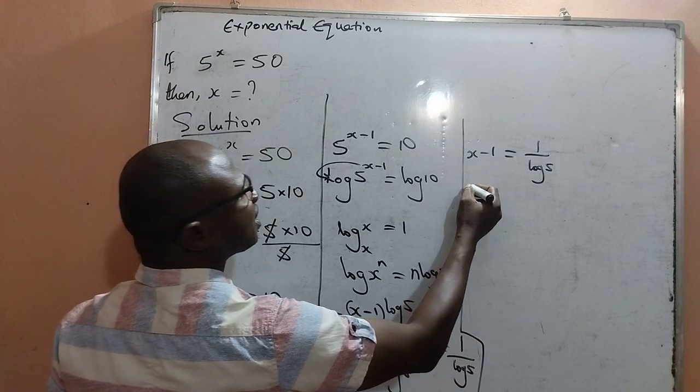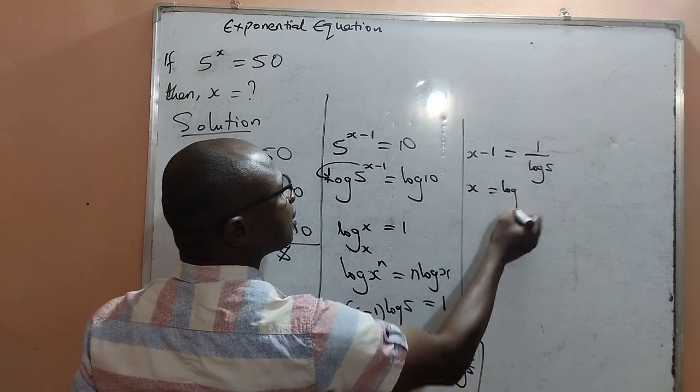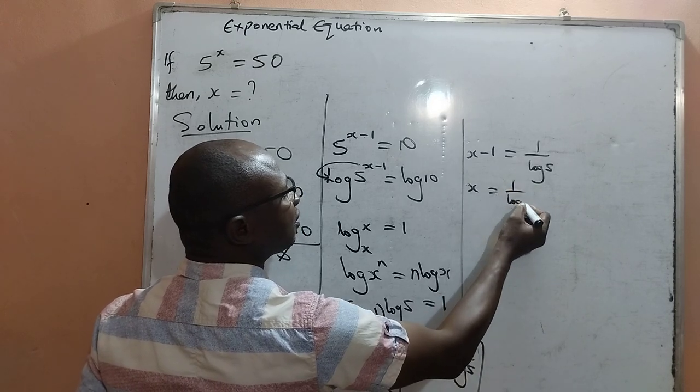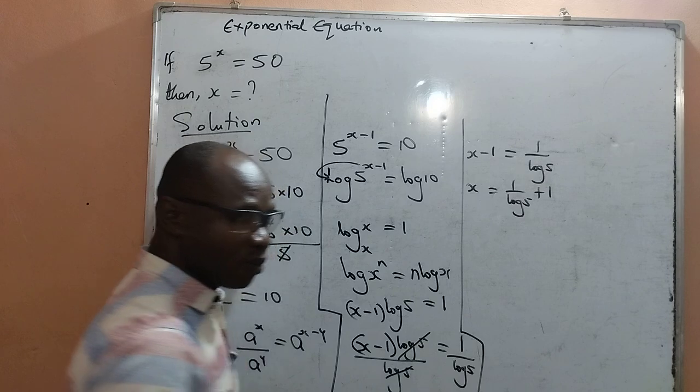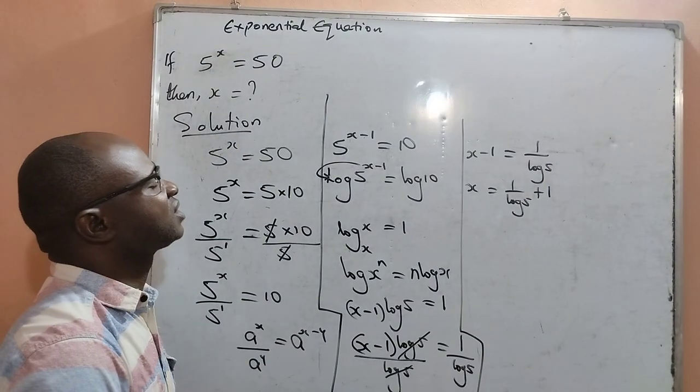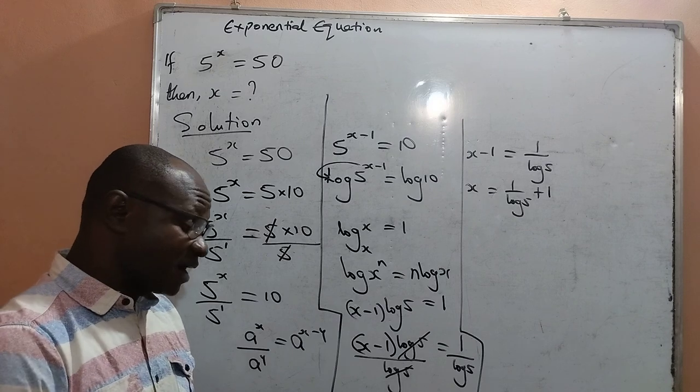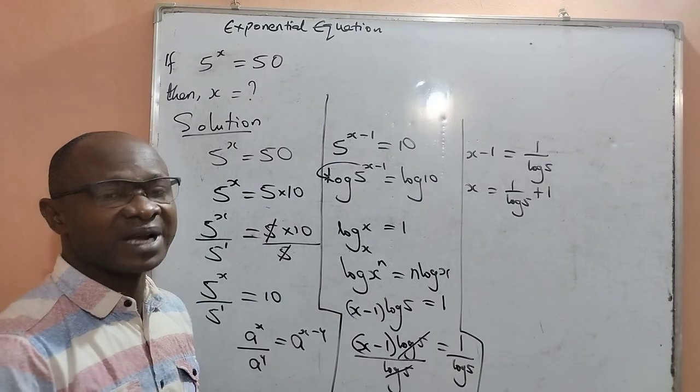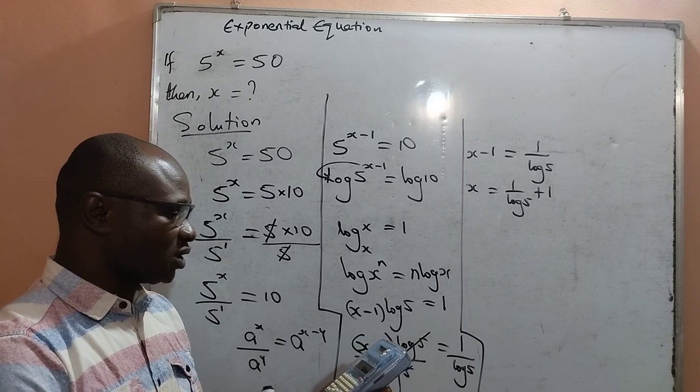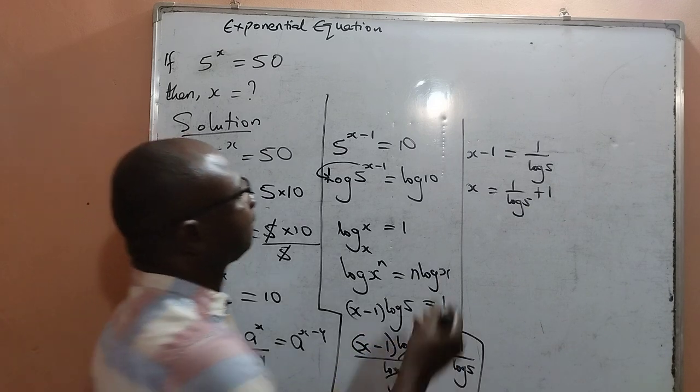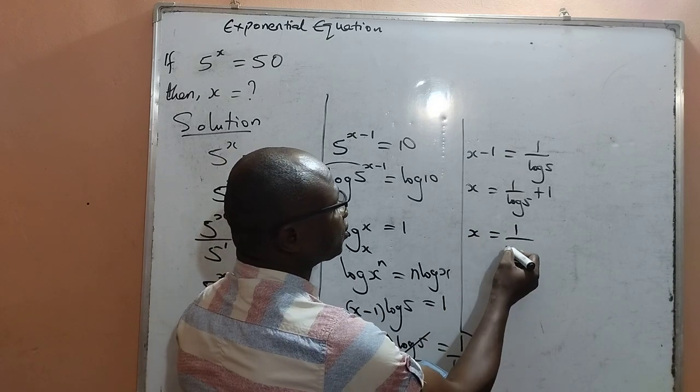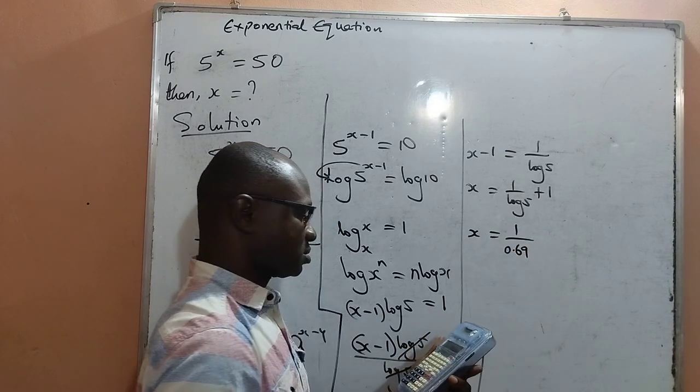This is the same as x equal to 1 over log 5 plus 1. That is, moving negative 1 from the left-hand side to the right-hand side. Let's find log 5. Log 5 is equal to x equal to 1 all over 0.69.